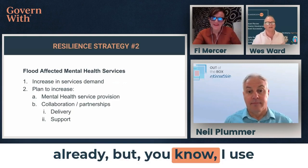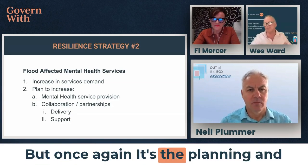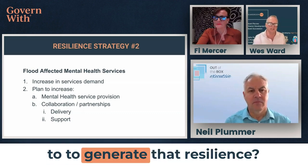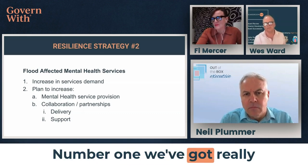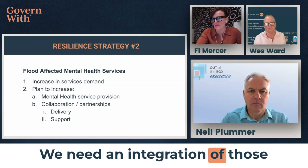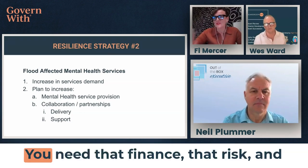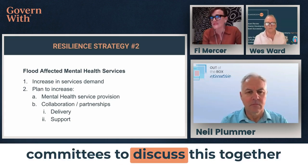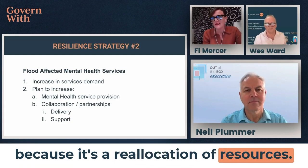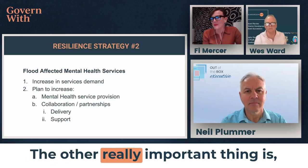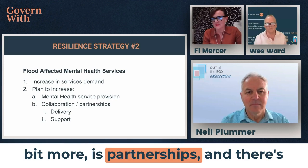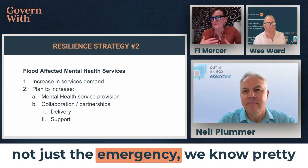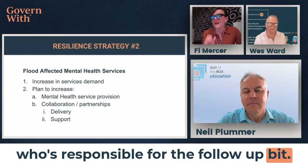Resilience strategy number two: mental health planning and board committee integration. We need good board subcommittees, but they need to be integrated to discuss complex topics like this. You need finance, risk and audit combined with sustainability and quality committees to discuss this together, because it requires a reallocation of resources. Another important element is partnerships. A question was raised about who is responsible not just for the emergency response but for the long-term follow-up, and we'll talk more about that.